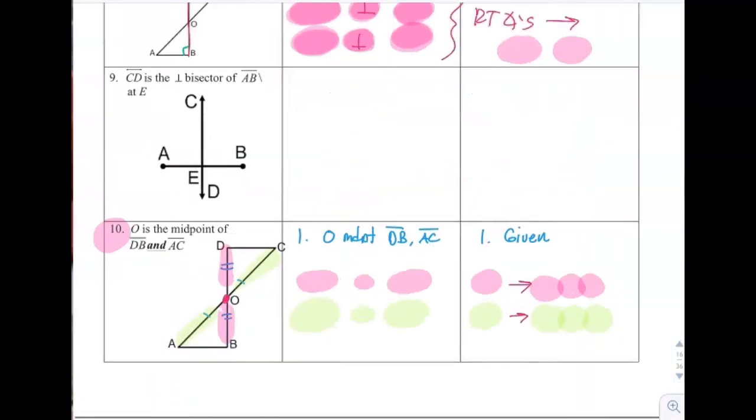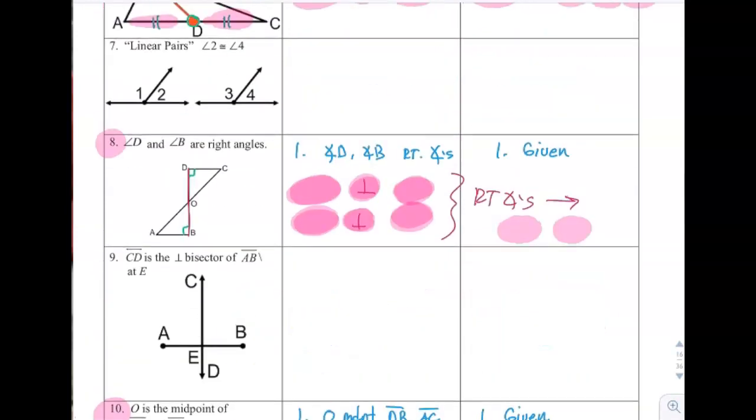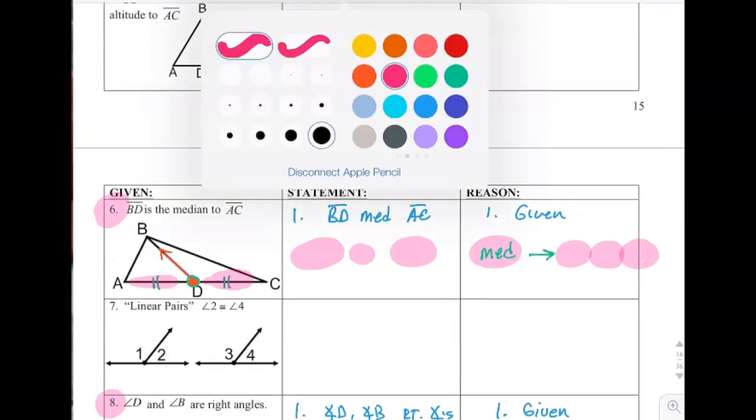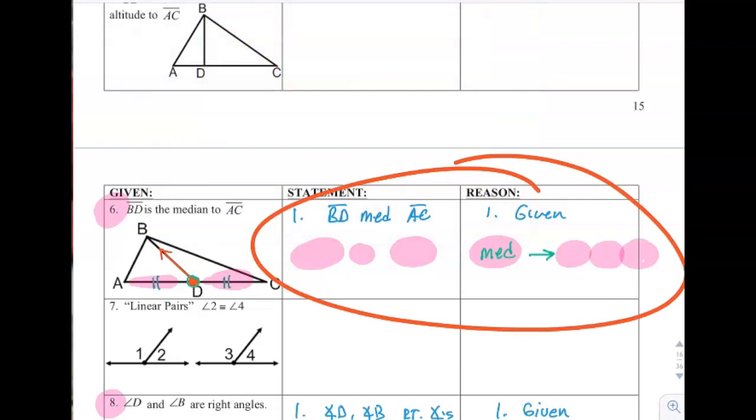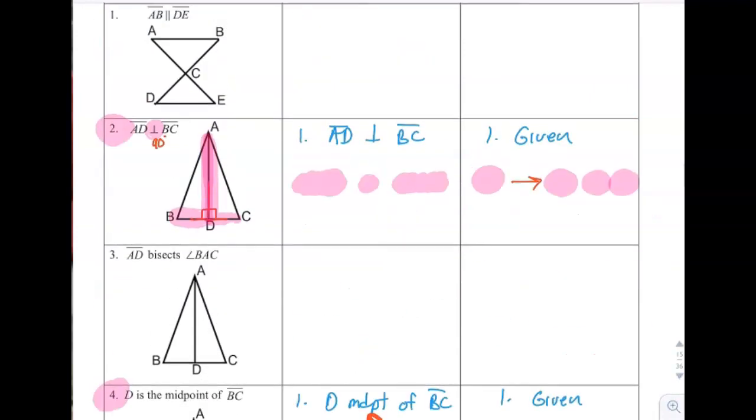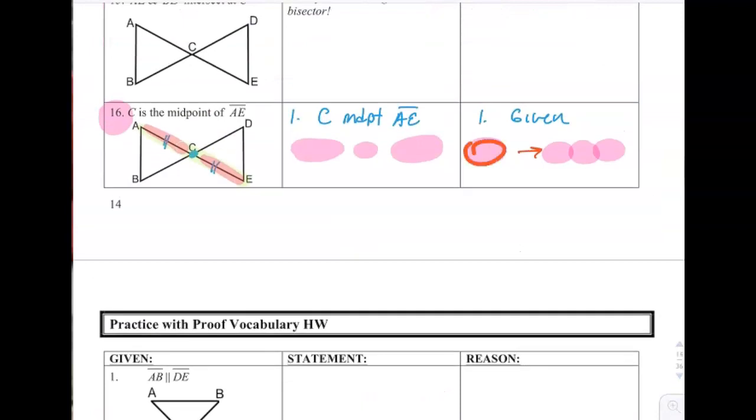Kind of abstract stuff, but you'll get the hang of it just writing the reason. If you haven't noticed yet, your second reason, I'll use this one as an example. Your reason, the word in your reason usually comes from the word in the statement above. So if you look at all the other ones, midpoint came from midpoint. Perpendicular came from perpendicular. Midpoint came from midpoint. Stop and watch this video as many times as you need to, and hopefully you get this done for tomorrow.